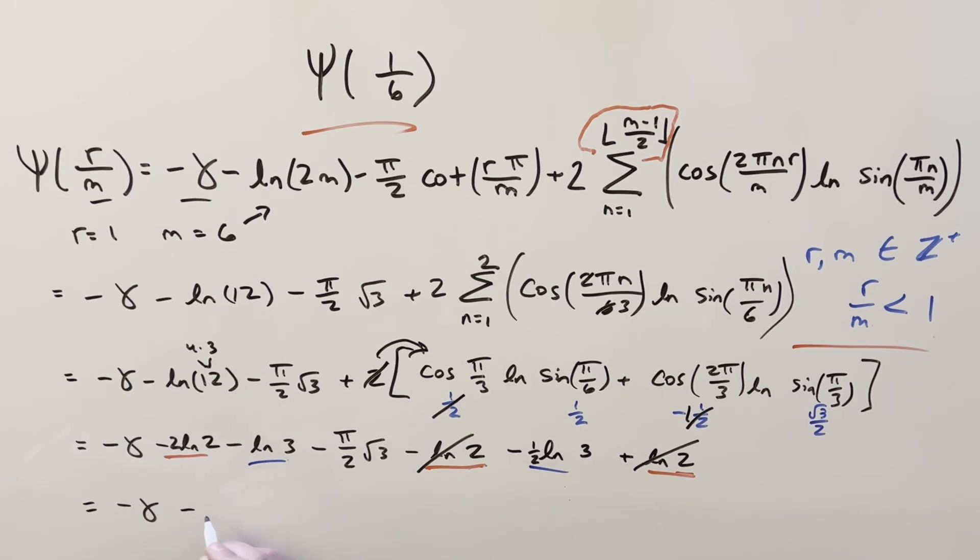Let's get this term over here. So we have minus pi over 2 square root of 3. Putting together our ln 3 terms, that's going to become minus 1, minus 1 half, minus 3 halves ln 3. And then we have this term left, minus 2 ln 2. And that's it.